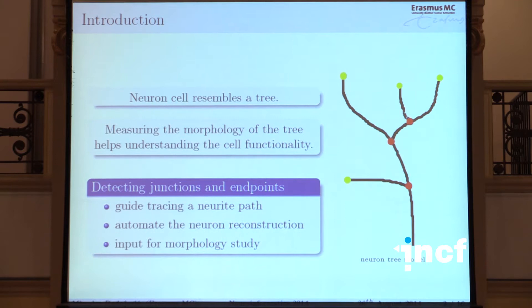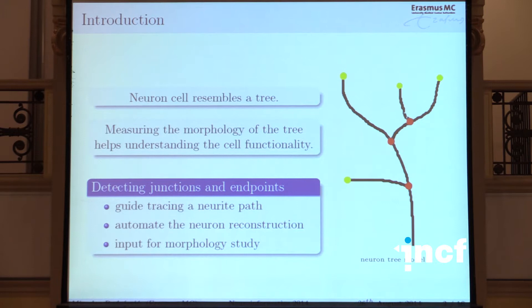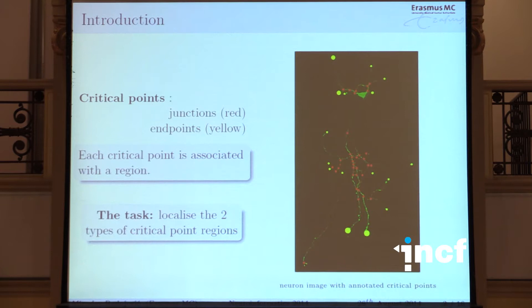Neurons resemble tree-like structures, and within this very simplified model you can see it's really like a tree-like structure. The morphology of the tree structure influences a lot how the neural system actually works — it's connected with functionality, simply how the branches connect with each other. Within that kind of structure, you have points marked with red and yellow: endpoints in yellow and junctions or bifurcations in red.